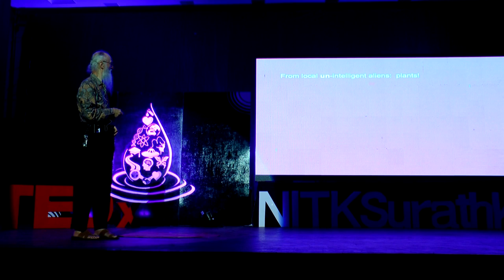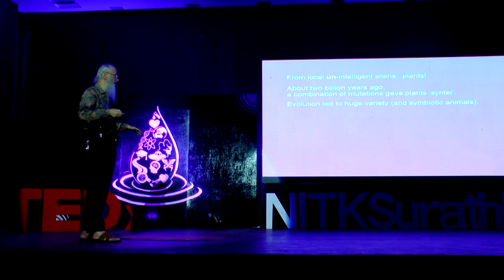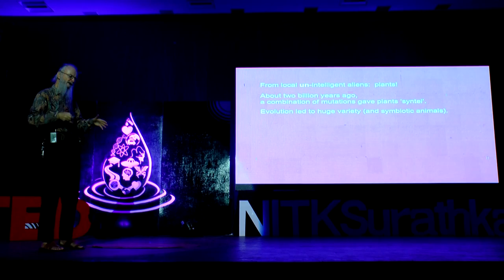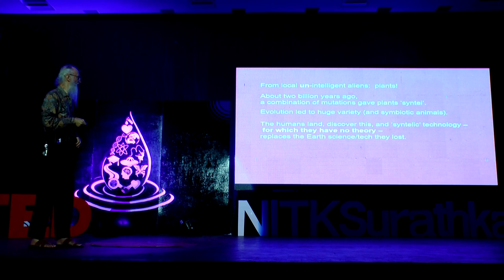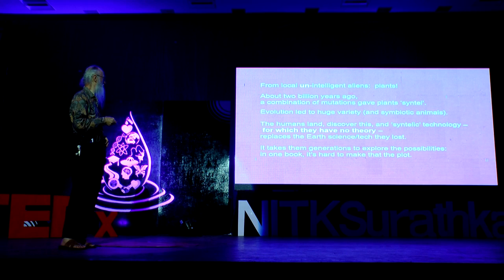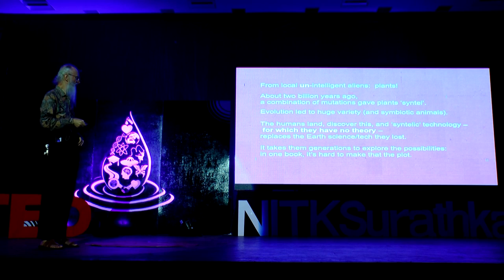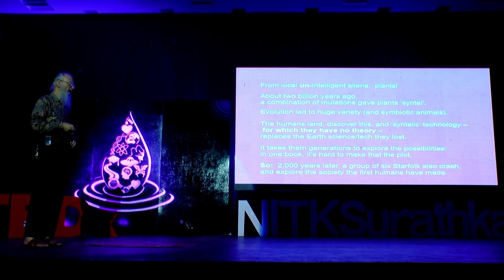Plants. About two million years ago, a combination of mutations gave plants Sinte. Evolution led to a huge variety of ways of using these things, and not just plants, because you get symbiotic animals using the Sinte that are actually from the plants. The humans land and discover this synthetic technology, which they have no way of knowing how it works, but they can work it. It replaces the Earth science and technology they lost. But it takes them generations to explore the possibilities, and in one book it's hard to make that the plot.